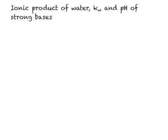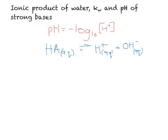Welcome to this video tutorial on the ionic product of water KW and the pH of strong bases. So far we've looked at how to calculate the pH of a strong acid, which can be used as virtually all strong acids ionise fully. For a strong monoprotic acid, we can say the concentration of the hydrogen ion is the same as the concentration of the acid, and we know that strong acids have a pH between 1 and 3.